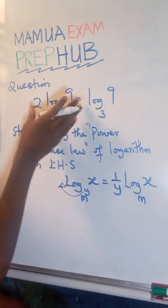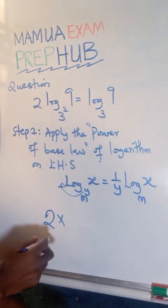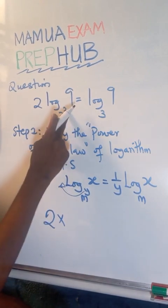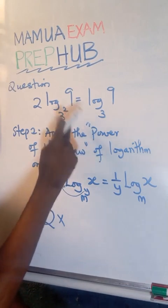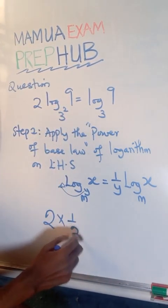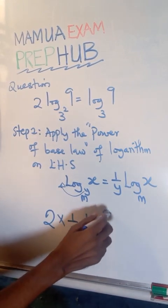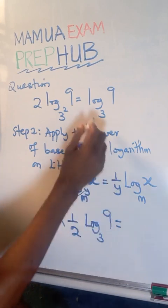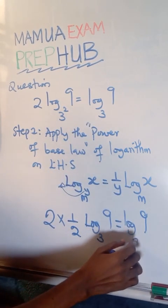Now to apply it to this, I have, of course, we have 2 times 3 raised to power 2. So I will bring the reciprocal of this based on the power of numbers. So the reciprocal of 2 is 1 over 2. So log 9 base 3 is equals to log 9 base 3.